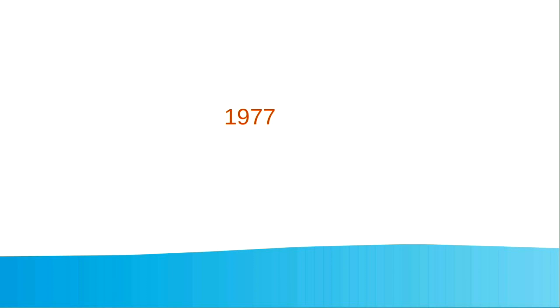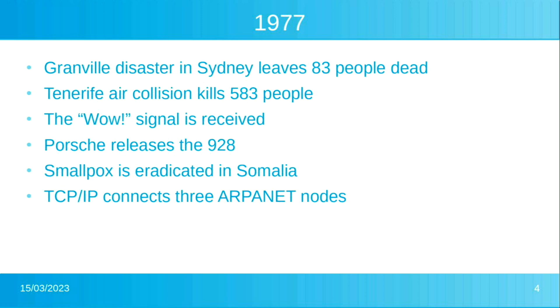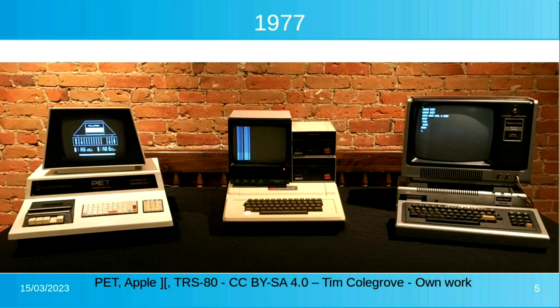I want to take you back to 1977. The first hints of an internet started appearing. Something particularly important for a lot of people here was that the PET, the Apple II, and the TRS-80 appeared on the scene. Along with a number of other personal computers, they really took computing from stuff you did at your parents' work or in a library into the home that you could play with yourself.